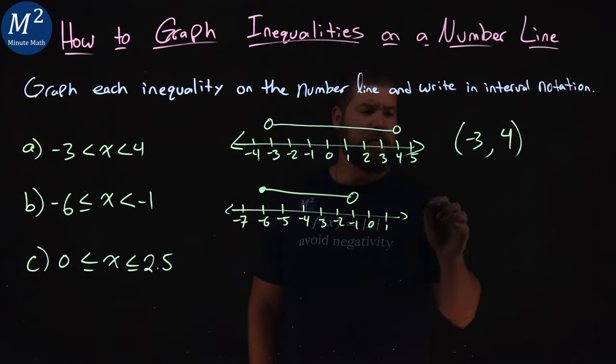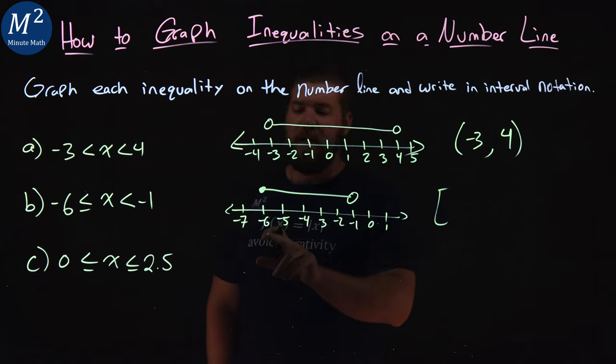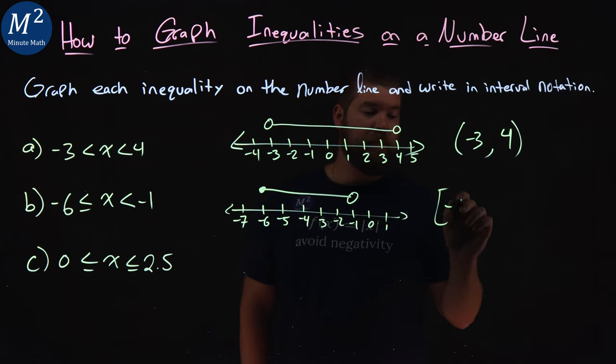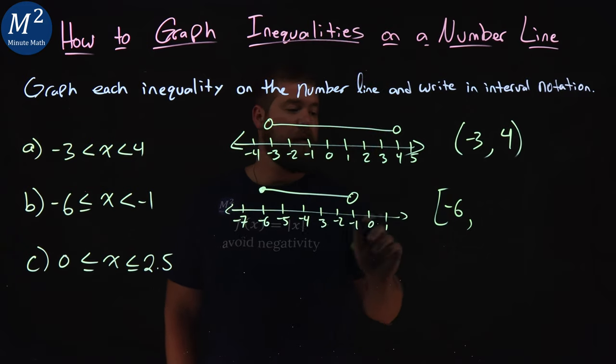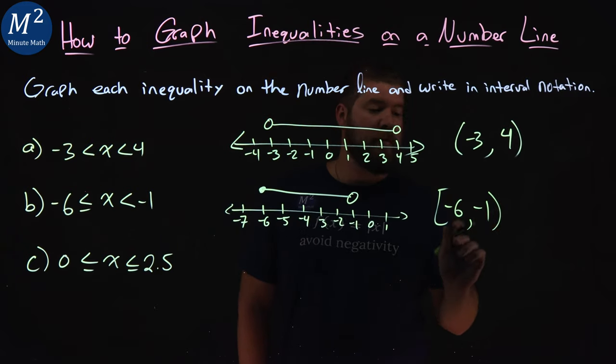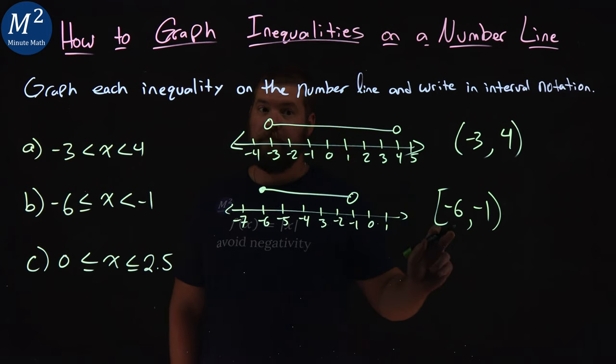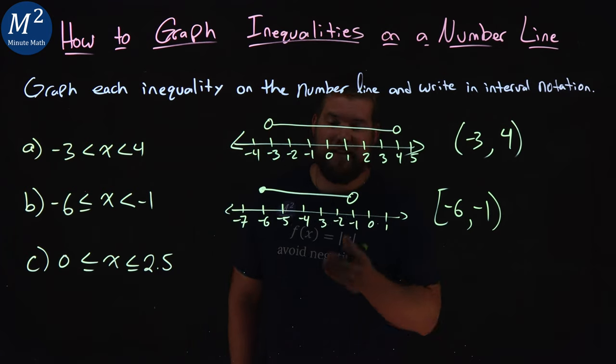Now let's write this in interval notation. We can equal a negative 6, so we must have a bracket, the lower bound, comma. Our bound here is a negative 1, but we put a parenthesis because we're not equal to a negative 1. And there we have our interval notation for this graph.